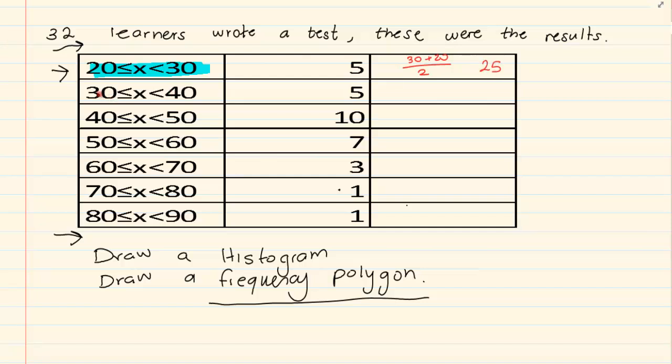And then you have 40 plus 30 divided by 2, which is 35. 50 plus 40 gives us 45.